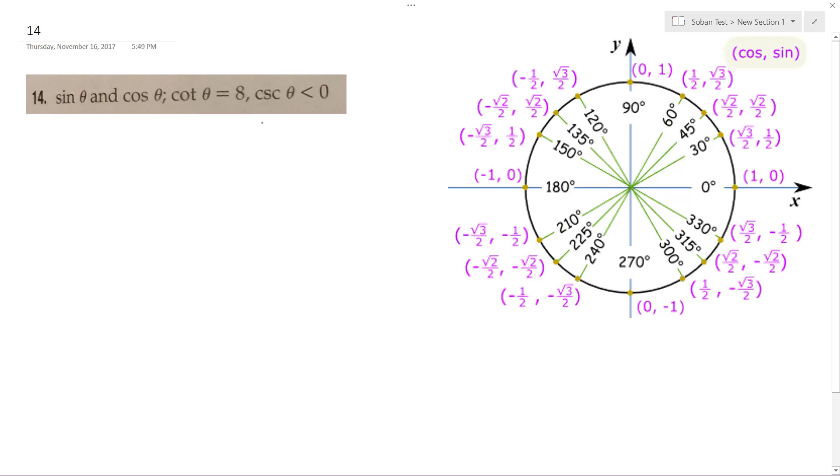and then the cosecant, which is essentially 1 over the sine. So if it's less than 0, that means sine's got to be either in quadrant 3 or 4. And since cotangent's positive, that means this is going to take place in quadrant 3.